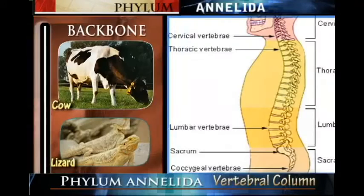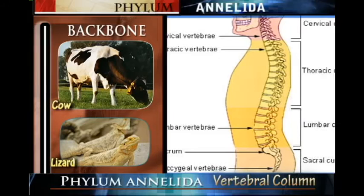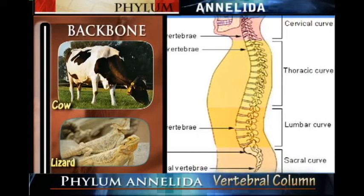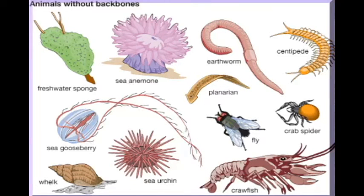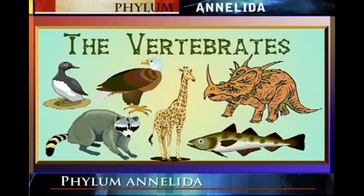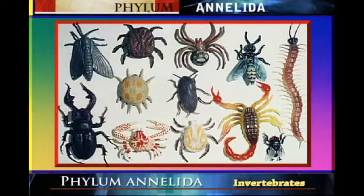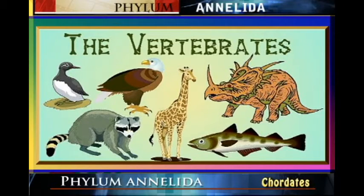Welcome to this session where we are going to look at the invertebrate groups. Going back to review: living things are divided into two groups — organisms that have a backbone and those that do not. Those with backbones we call vertebrates, and those without we call invertebrates. The vertebrates have only one phylum, phylum Chordata, while most phylums are found in the invertebrates.